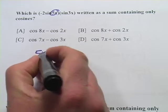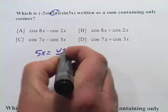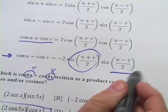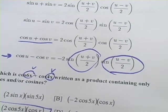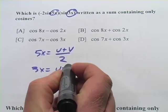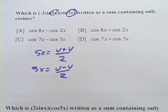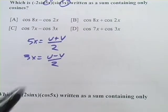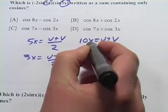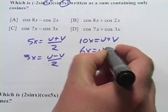5x equals u plus v over 2. And now we have the 3x. It's going to sub in right here. So the 3x is going to be u minus v over 2. 3x equals u minus v over 2. Now we'll do a little bit of simplifying here. We'll multiply both sides by 2. 10x equals u plus v. And 6x equals u minus v.